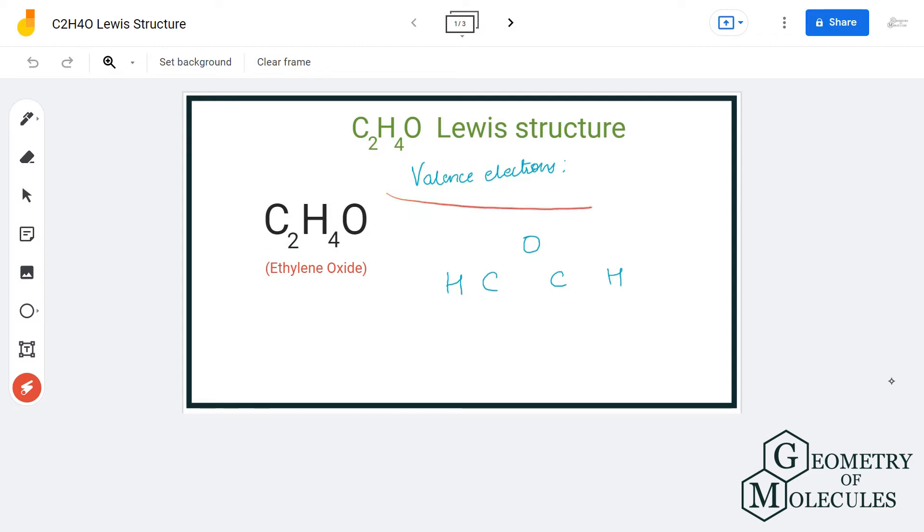Here we have two carbon atoms, and each carbon atom has four valence electrons, so 4 times 2, we have 8 valence electrons from carbon. We have four valence electrons from hydrogen atoms and six valence electrons from oxygen atoms. So we have a total of 18 valence electrons for this molecule.